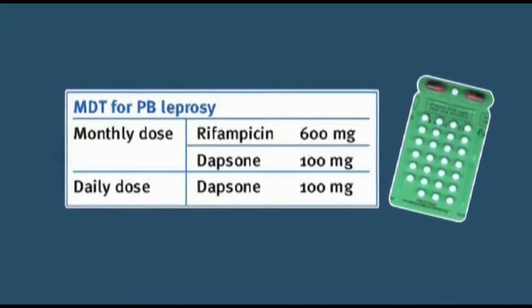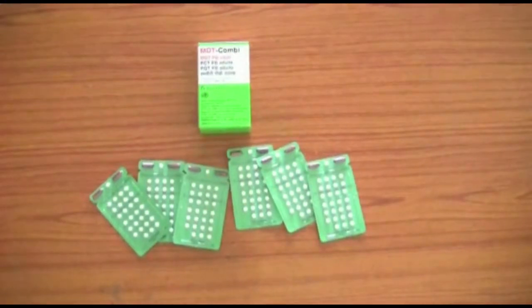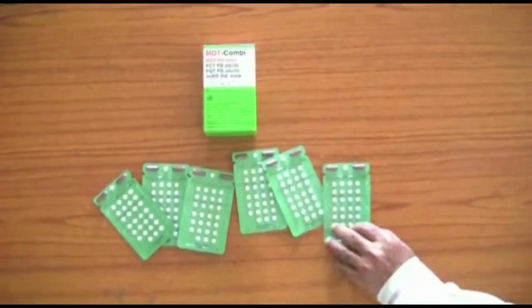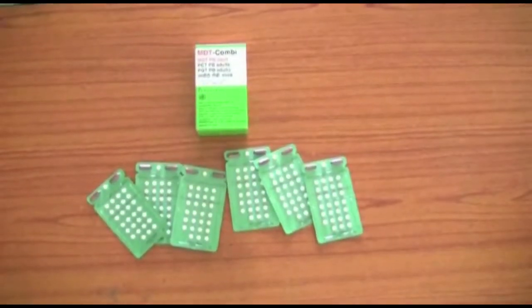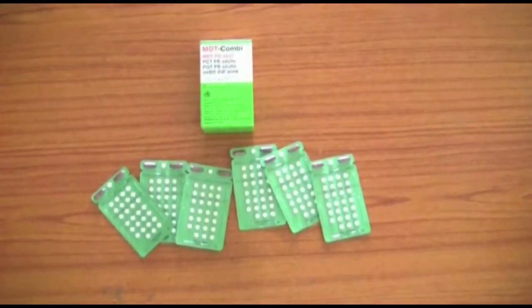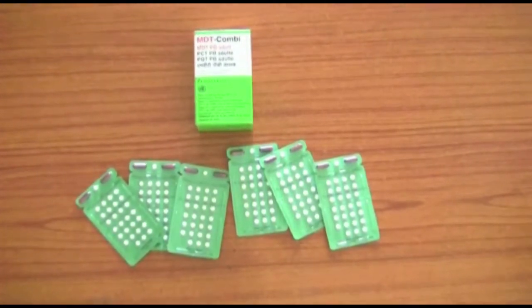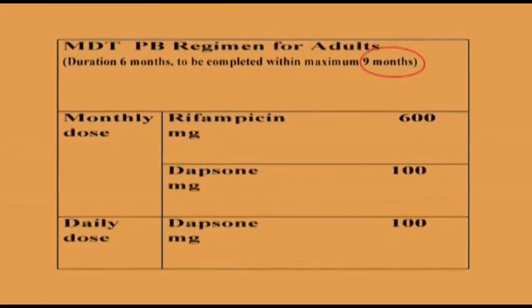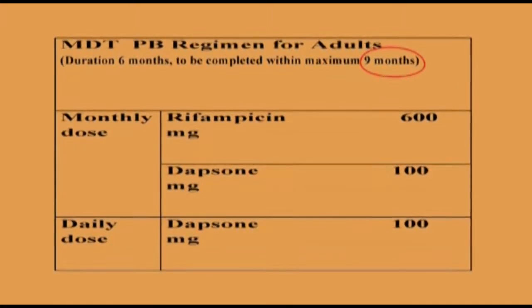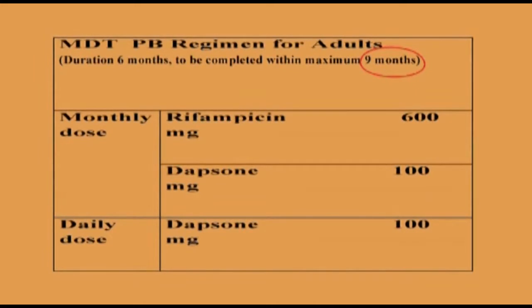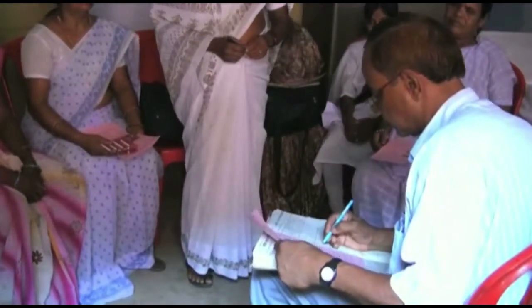For PB leprosy, treatment is given for 6 months. Here are the 6 blister calendar packs. The monthly dose or pulse dose is taken at the start of each pack at the health facility. The daily dosage is taken at home every day for 6 months. To be effective, the course must be completed within 9 months or less. It is useful to write the due date of treatment completion just after the date of the first dose on the patient record card.